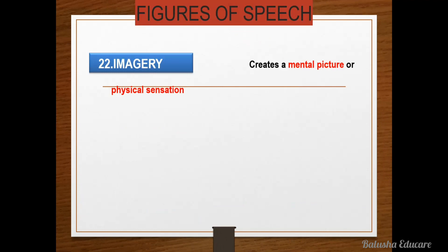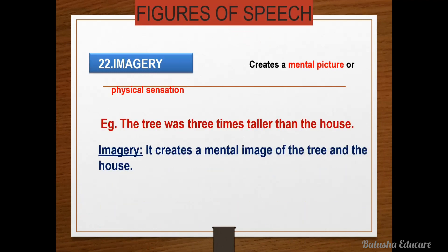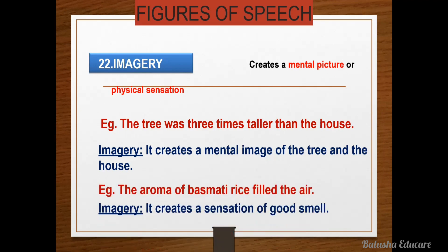Next figure of speech is imagery — it creates a mental picture or physical sensation. For example, 'The tree was three times taller than the horse' — imagery figure of speech, it creates a mental image of the tree and the horse. Another example: 'The aroma of basmati rice filled the air' — imagery figure of speech, it creates a sensation of good smell. The aroma gives us a sense of smell we can compare and relate to.